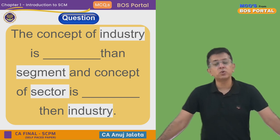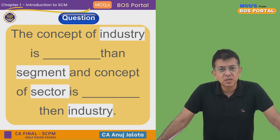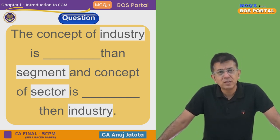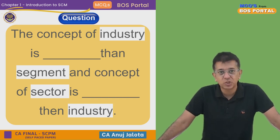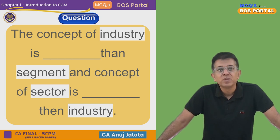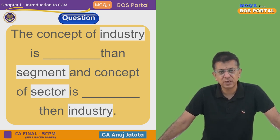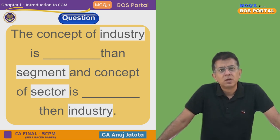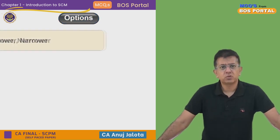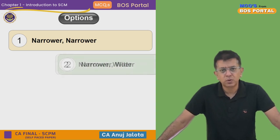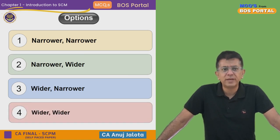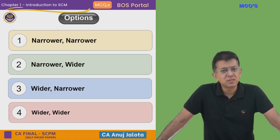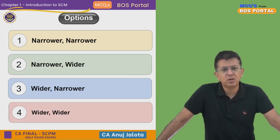Let's see the question. We are on Chapter 1 — Introduction to SCM. The question is: the concept of industry is dash than segment, and the concept of sector is dash than industry. The four options are: narrower/narrower, narrower/wider, wider/narrower, and wider/wider.